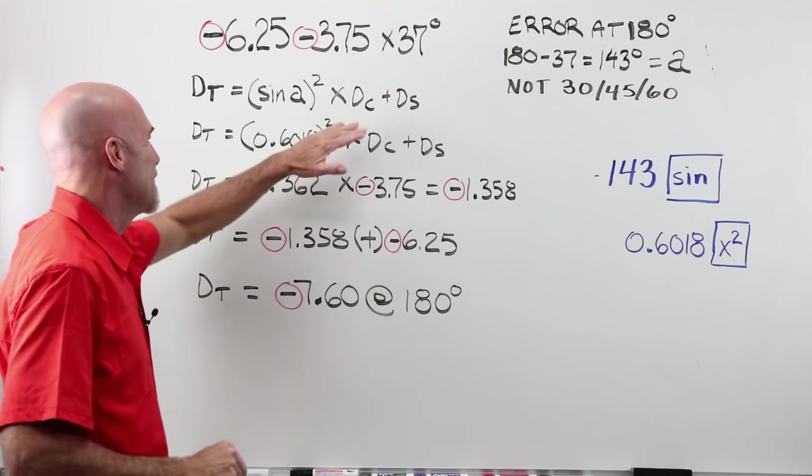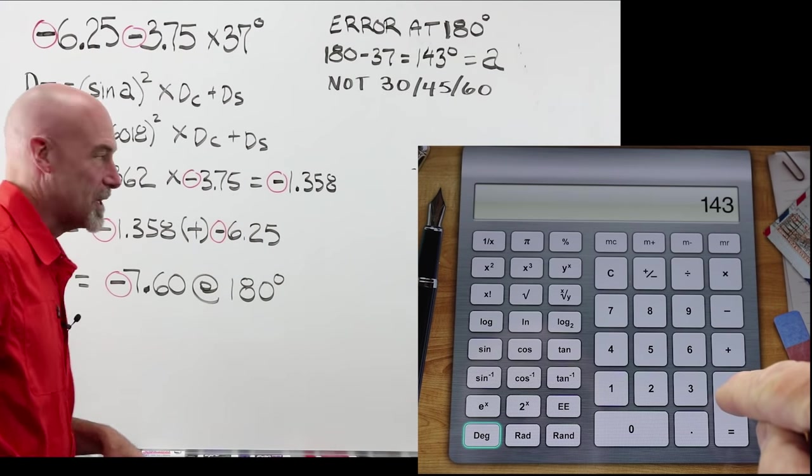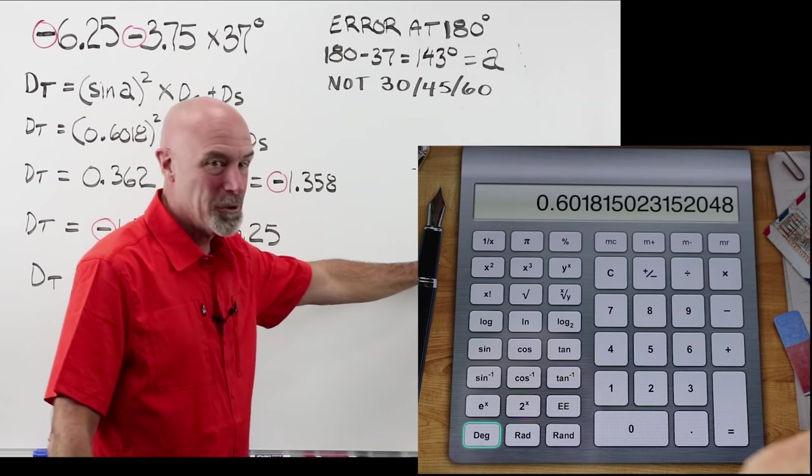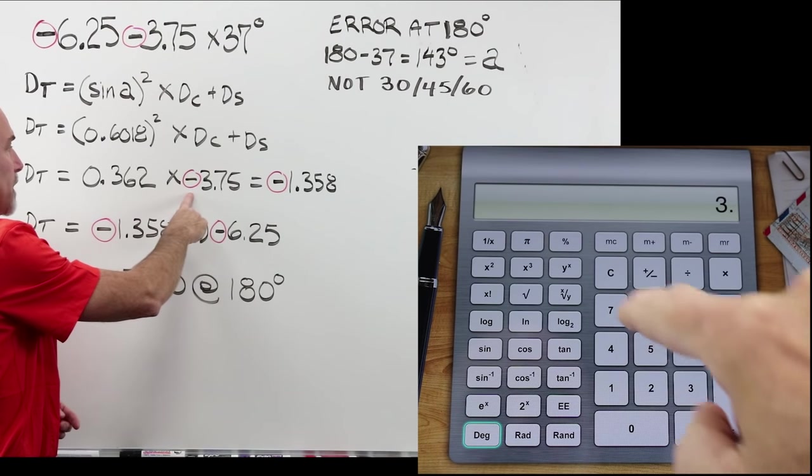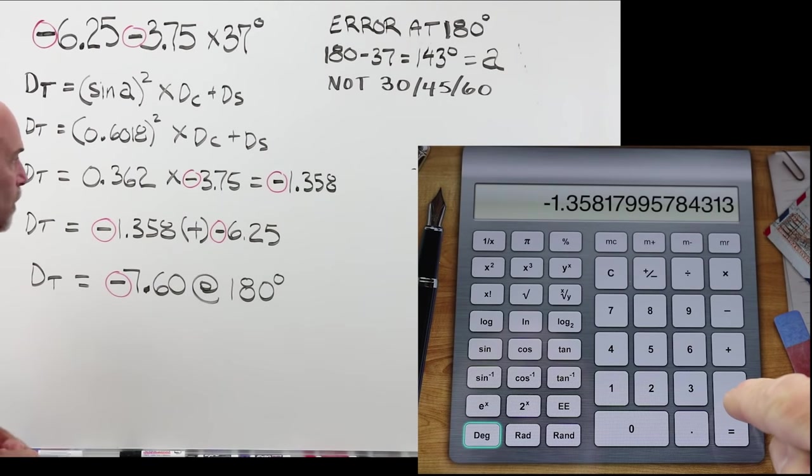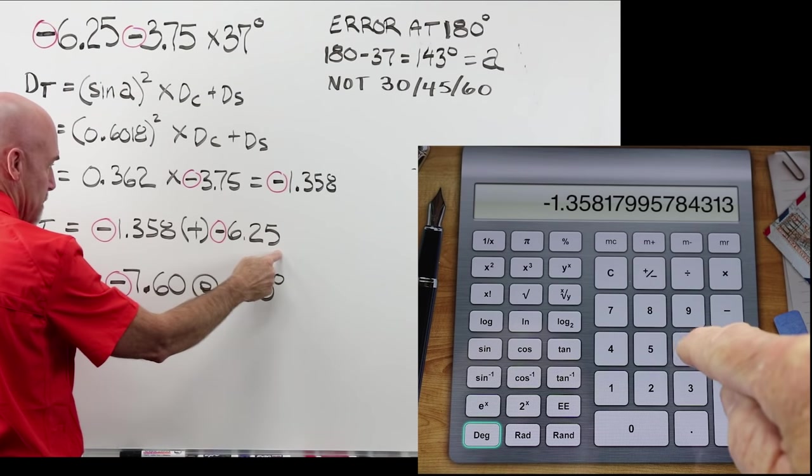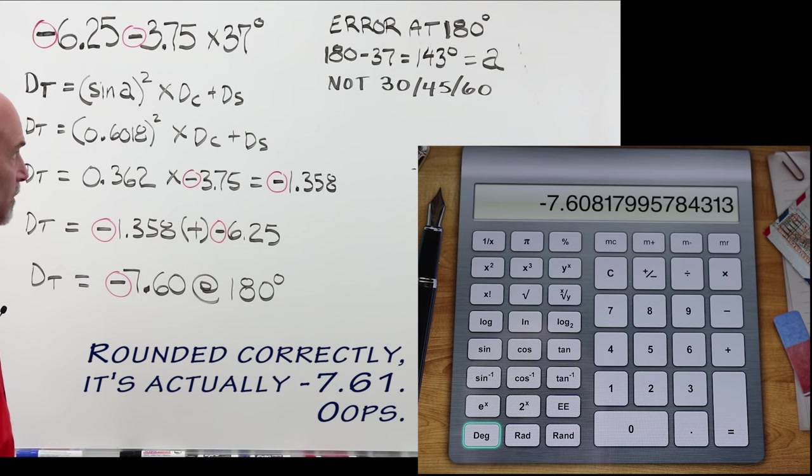Our power is equal to the sine of A squared multiplied times our cylinder plus our sphere. If you take our 143 and you hit your sign button in your scientific calculator, you should end up at 0.6018. Go ahead. If you have that number pulled up into your calculator and you hit your square button, you should end up at 0.362. Now, you may hit your multiplication and put in your 3.75, hit your plus minus button. Your friend, your plus minus button, and you're going to end up at minus 1.358. This is not the number you're after. The number you're after is your minus 1.358, which is the cylinder value at that position, plus your total power of your minus 6.25, which gives you minus 7.60 at 180 degrees, which is what we're after.